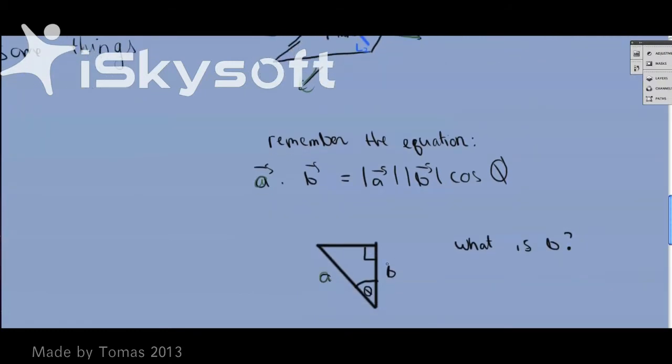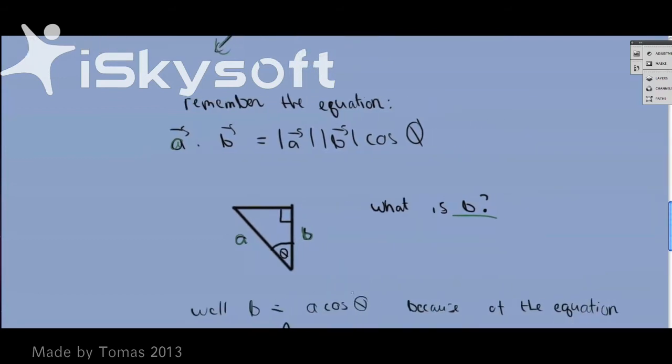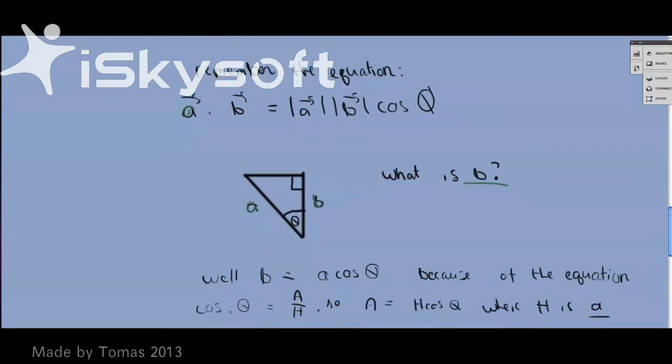Here's a triangle, this is side a, length a, this is length b, and we're asked to find what is length b. What do we do? Well, b is a·cos(θ), because of the equation cos(θ) equals adjacent over hypotenuse, so adjacent equals h·cos(θ), where h is a, because this is obviously h, because this is the right angle, and this is adjacent to this, because that's the opposite of the angle.